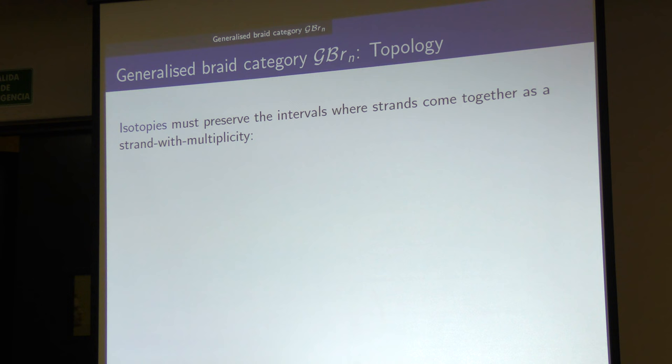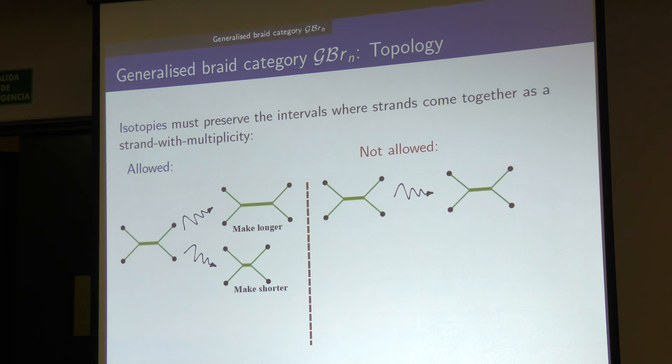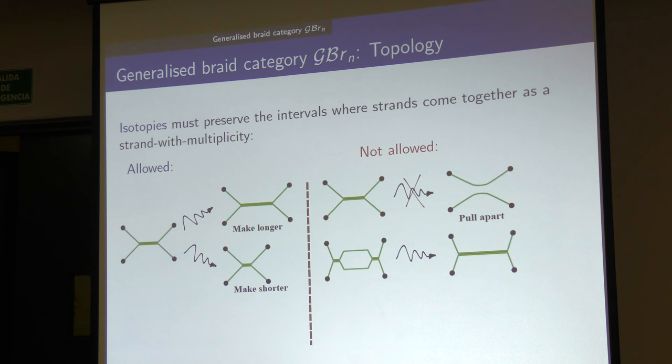Here is what we allow to do to these intervals by isotopy. You can make an interval bigger — elongate the interval where strands join together — or you can make it shorter. What you are not allowed to do is take an interval and make it so small that it splits apart completely. You are also not allowed to take two intervals and elongate them so much that they join up, turning two intervals into one. Finally, you are not allowed to change the order in which the strings come together.